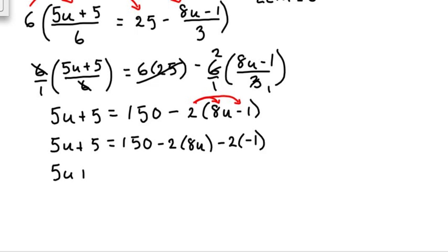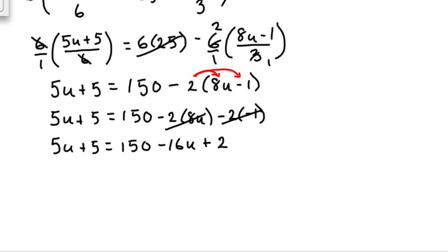So we have 5u + 5 equals 150, and negative 2 times positive 8u is negative 16u, and negative 2 times negative 1 is positive 2. Now we still need to combine like terms: 150 and positive 2 give us positive 152, so the equation becomes 5u + 5 = 152 - 16u.